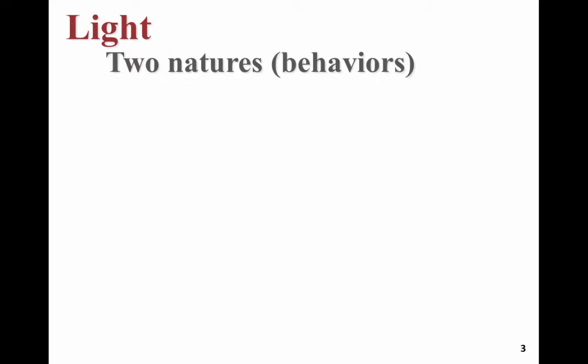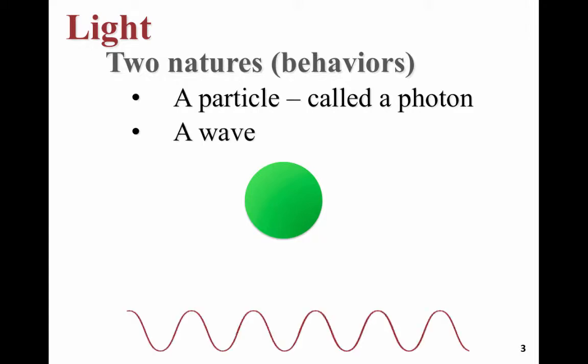We also describe light as having two natures, two behaviors. One way to think of light is to think of it as a particle called a photon. In some cases, this is a great model. It's a great construct to see how light behaves. Another way we think of light is to consider it as a wave. A wave is something that carries energy from one place to another. So, light has two natures, two ways that it behaves. And really, you could think of light as kind of being both.